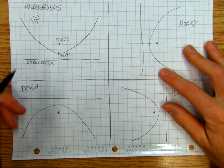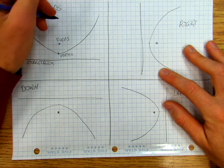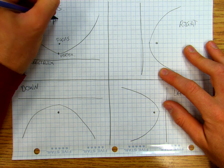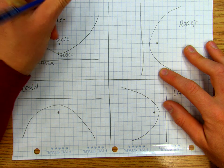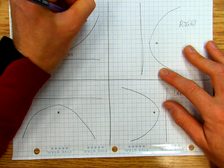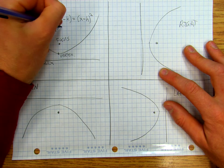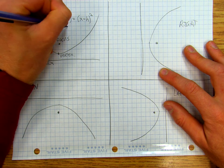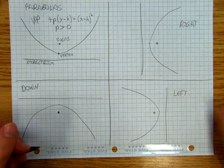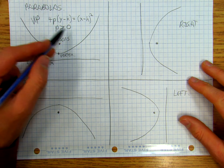So if it opens up, we're going to have 4P(y minus k) equals (x minus h) squared, and p is going to be greater than zero. So that's the key thing to understand, if it opens up, p is greater than zero.